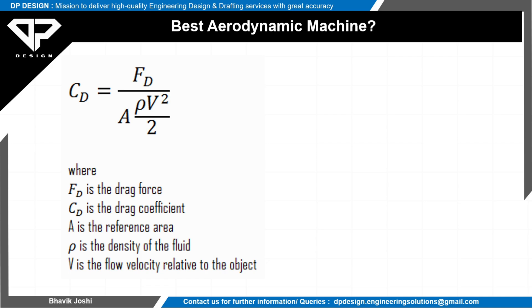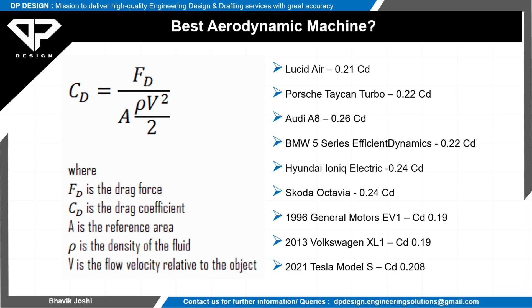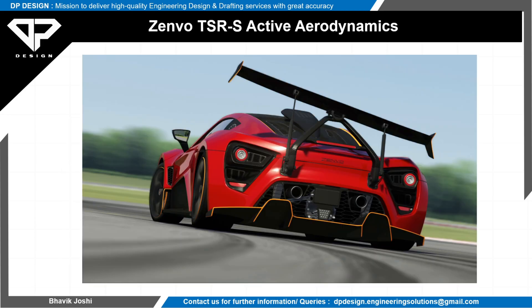I am listing down some car manufacturers — which you may not have heard of — whose cars have the lowest drag coefficient (Cd). These include Lucid Air, Porsche, Audi, and BMW. You can note down those cars and their drag coefficients to learn how aerodynamically efficient they are.